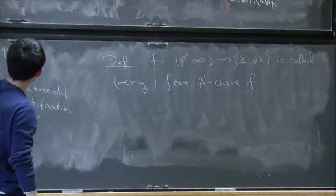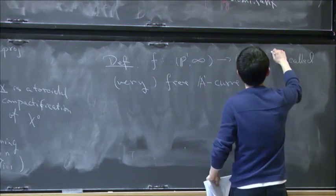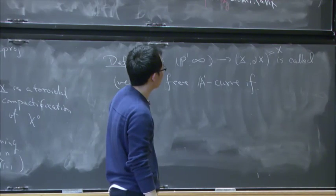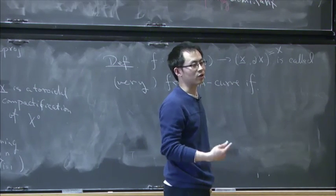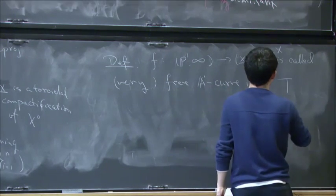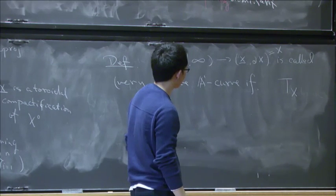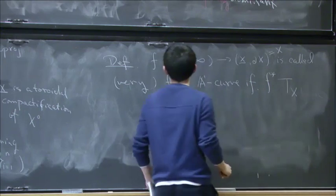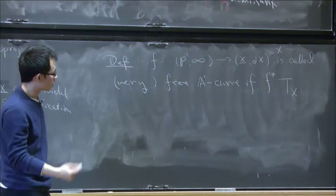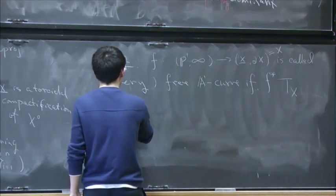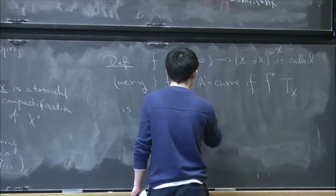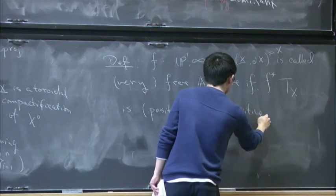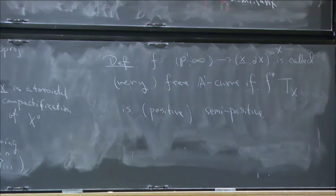So the nice thing about toroidal compactification is there is a well-defined, so I will call this one, this pair X. So there is a well-defined notion of logarithmic tangent bundles, and in case this one has only toroidal boundary, then the logarithmic tangent is actually a bundle, not a sheaf. So I can consider the bundle, the logarithmic tangent bundle, and I can pull it back to this P1 with marked point. So this one is called very free if this one is positive, and this free if it's semi-positive.